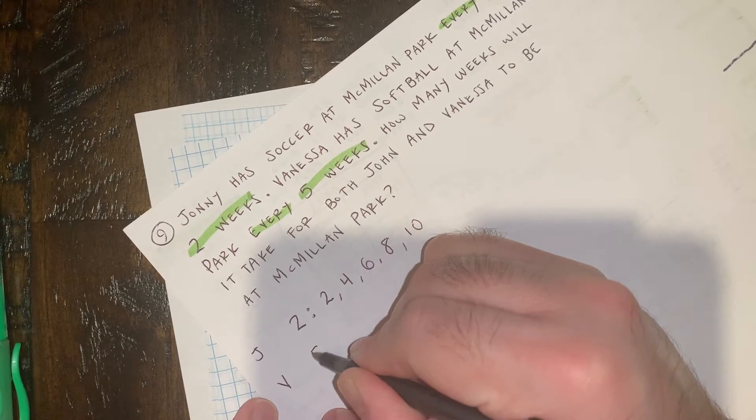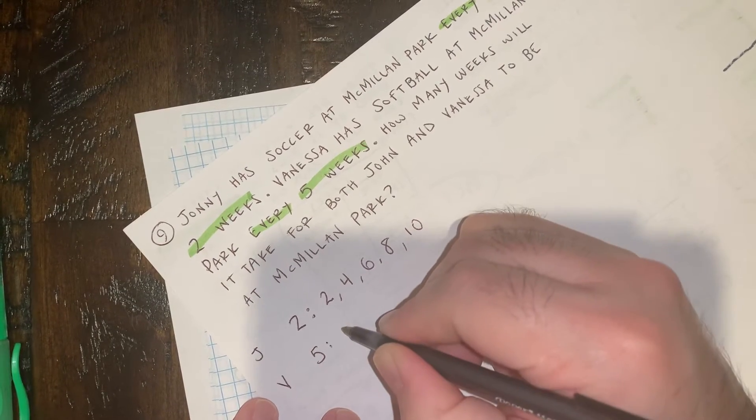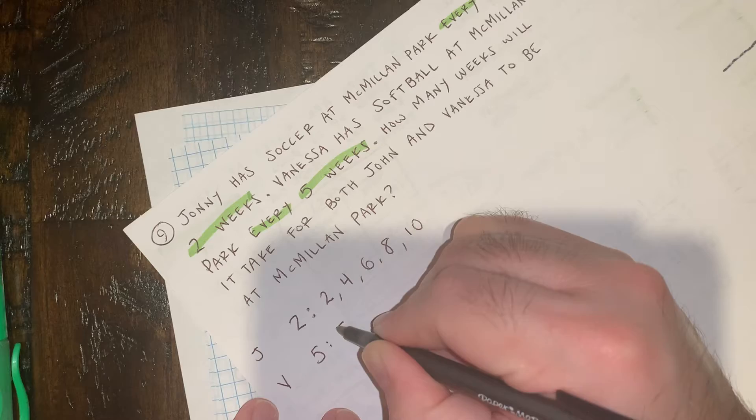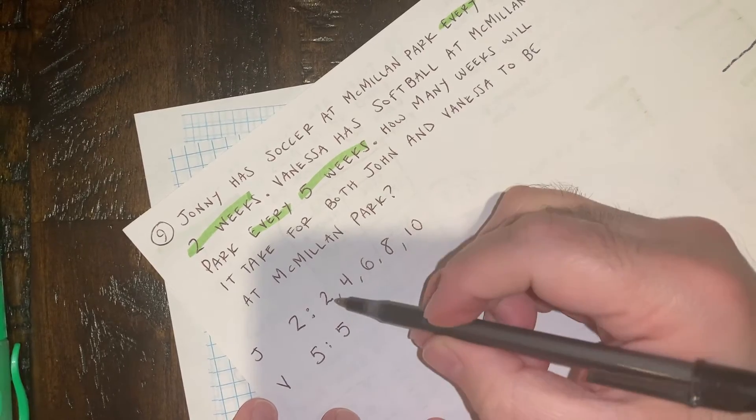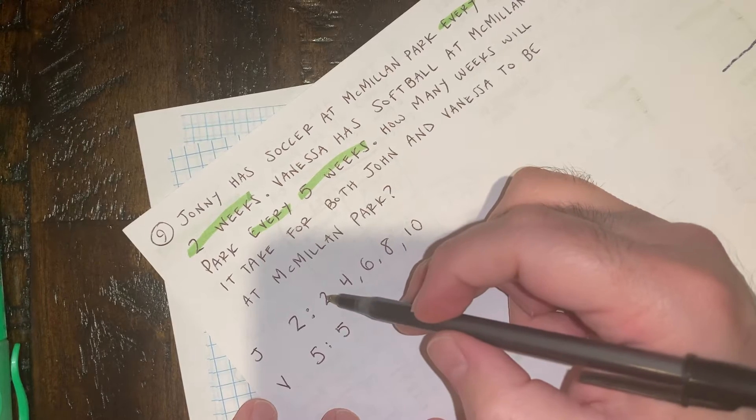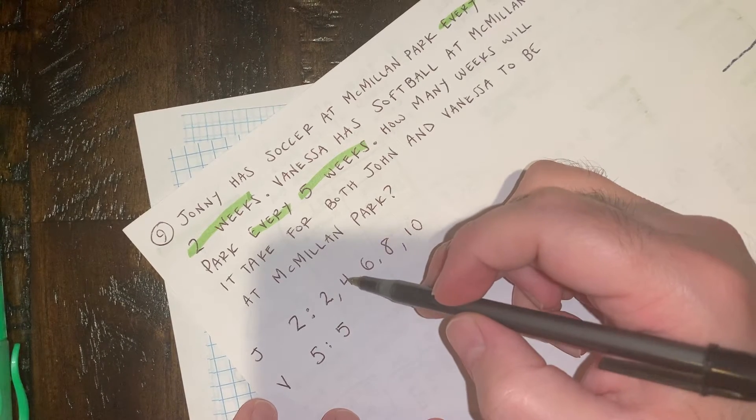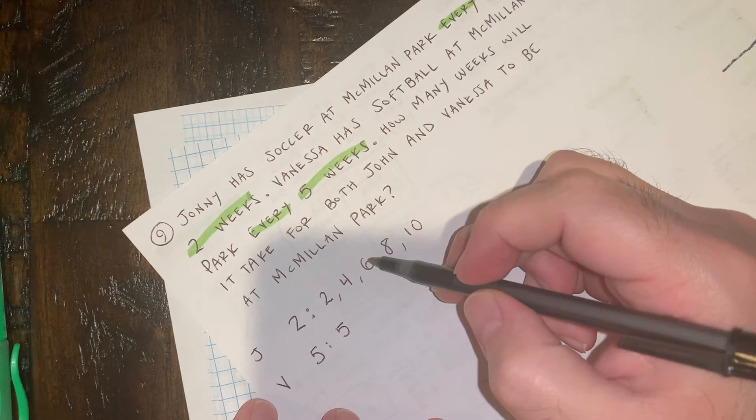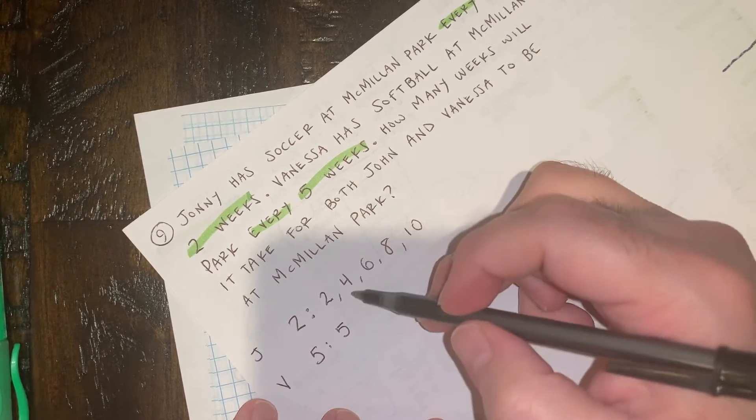So Vanessa, every five weeks. So let's count by fives. So Vanessa's gonna be at the park for the first time in five weeks. So you can see they're not gonna be in the park at the same time yet. Because Johnny was there two weeks, and then he was there at four weeks. But Vanessa was there at five weeks, and Johnny's there at six weeks. So you can see they missed each other.